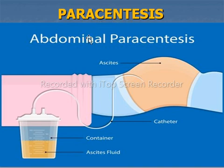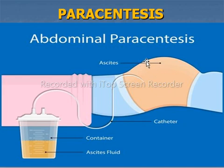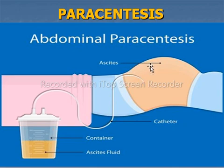Paracentesis is the procedure used to remove fluid from the peritoneal cavity. In this procedure the needle is inserted either 2 cm below the umbilicus or in the right or left iliac fossa region on the lateral side. The major amount of fluid is discarded and a small sample is collected and sent to the laboratory for various investigations, i.e. physical, chemical and microscopic examination to rule out pathology.